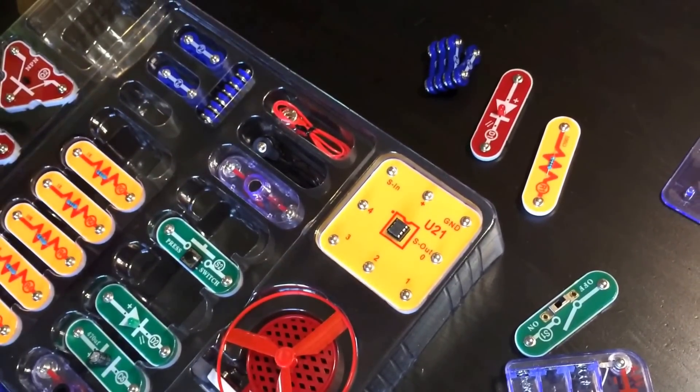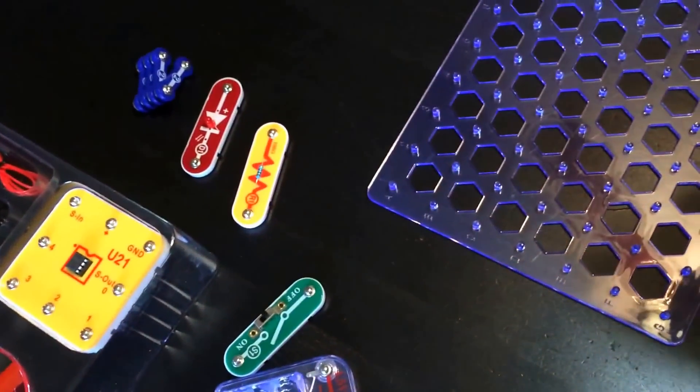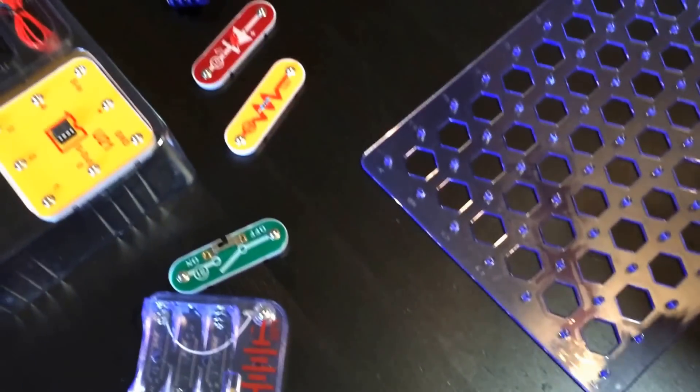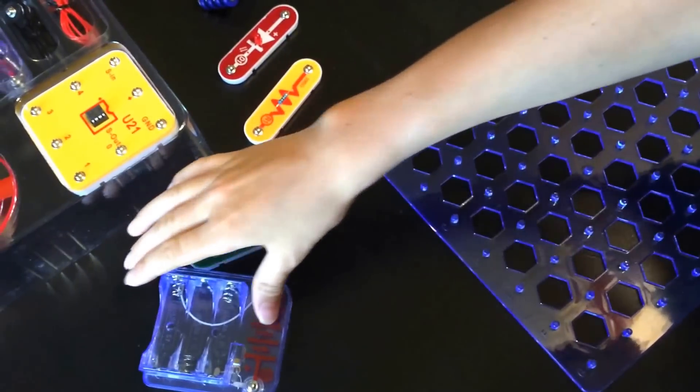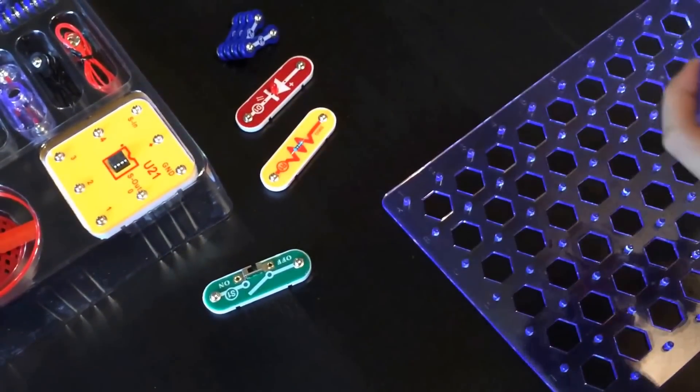We'll also be using the 100 ohm resistor and the battery holder. Is there anything else? Oh yes, and the red LED. What was that? Right there. There we go. Alright, so you read the directions and we'll start assembling it. Right there. So put the batteries in the battery pack first. Okay. Keep reading.